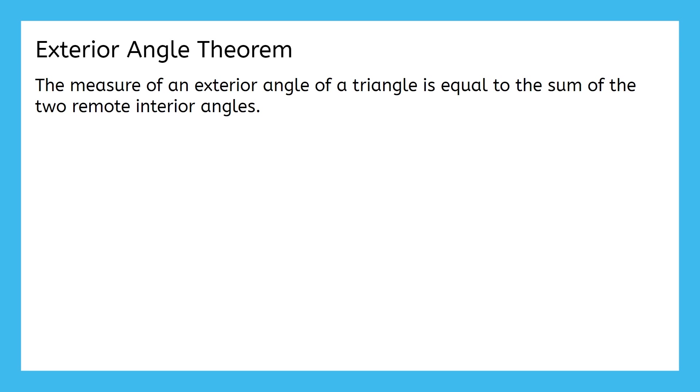We definitely need to pick this apart a bit more. Let's start by defining Exterior Angle. An Exterior Angle is created by extending one of the sides of the triangle. For example, here's a triangle. And if we extend a side, it creates an exterior angle. And here's another example of that.